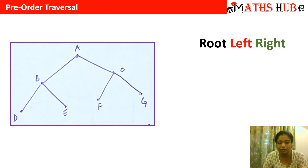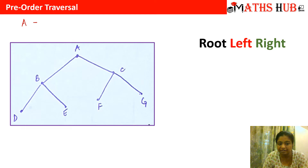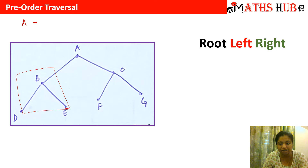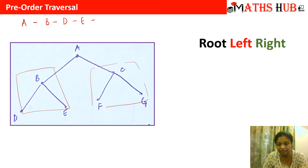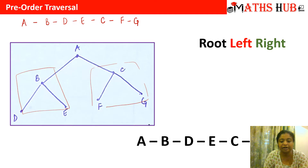Let's see an example. In this entire tree, A is the root vertex, so let's write down A first. After the root vertex is traversed, we go to the left part. In this left subtree, B is the root vertex, with D as the left vertex and E as the right vertex. Then we move to the next subtree, where C is the root vertex, F is the left part, and G is the right part. This becomes your pre-order traversal for this particular tree.